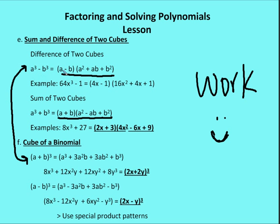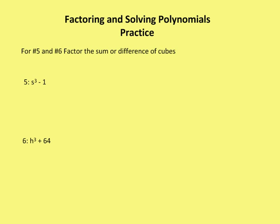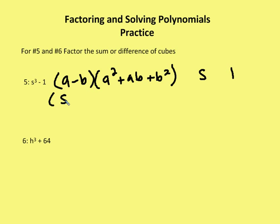Let's revisit the sum or difference of two cubes and what the special product pattern is. I have a cubed minus b cubed is going to be a minus b times a squared plus ab plus b squared. So minus plus plus. I have s as my a value and 1 as my b value. So now I have s minus 1 times s squared plus s plus 1.